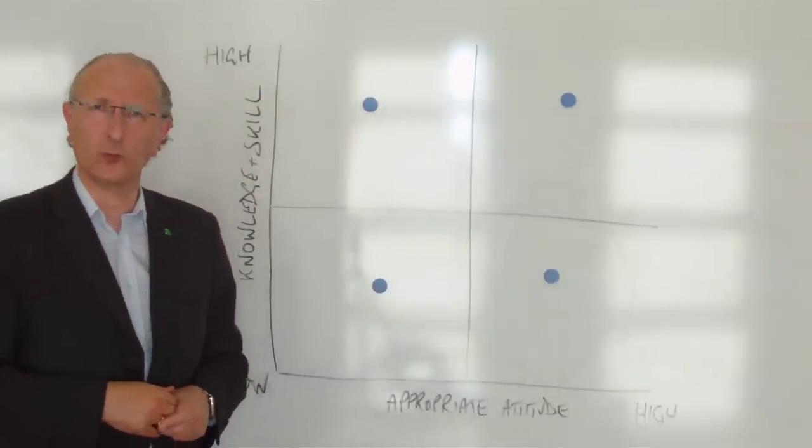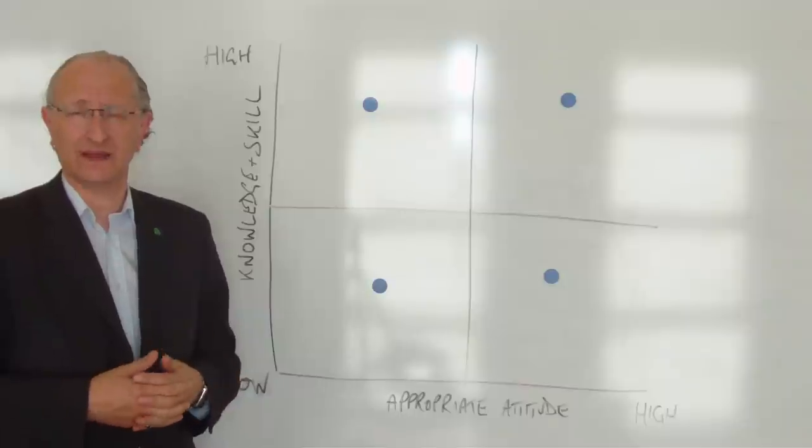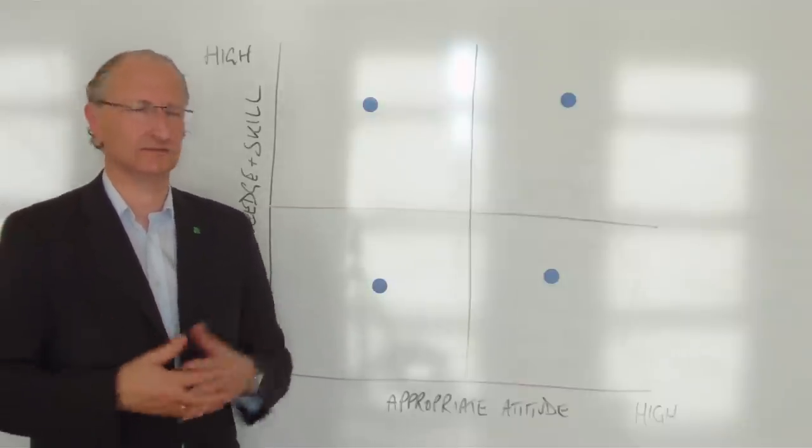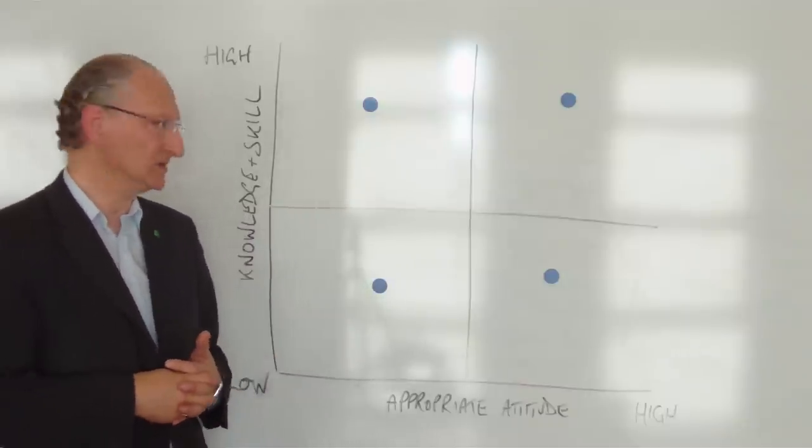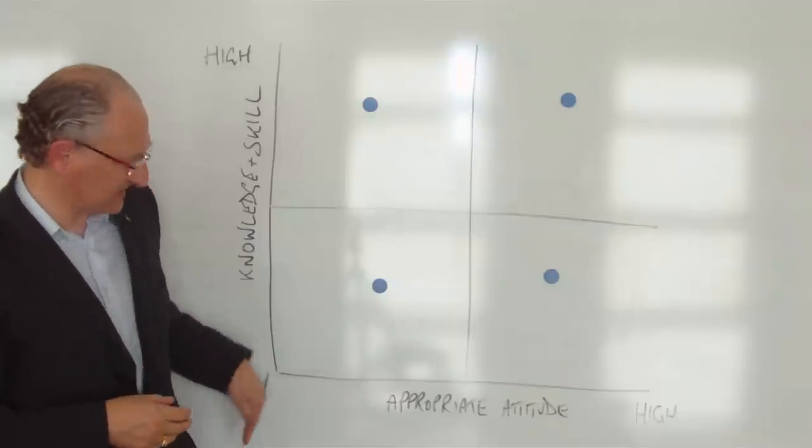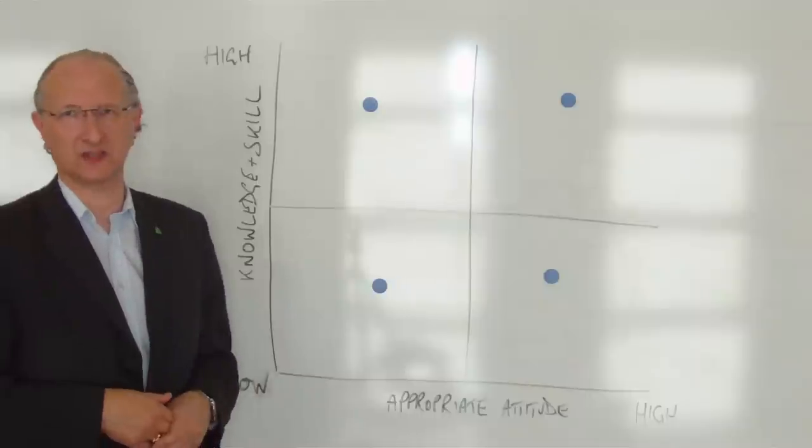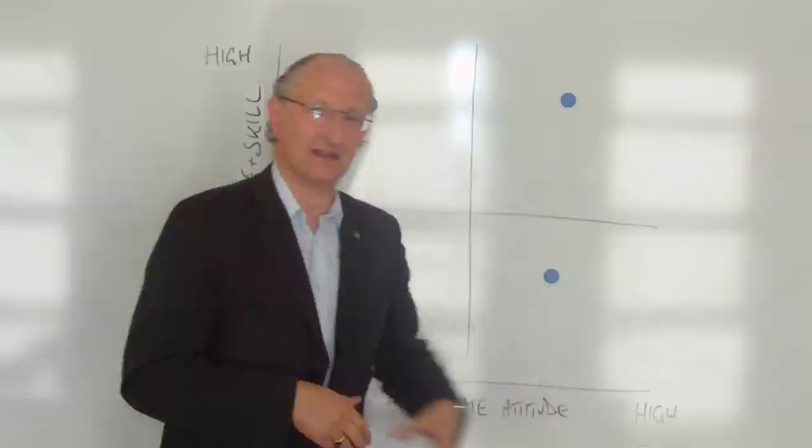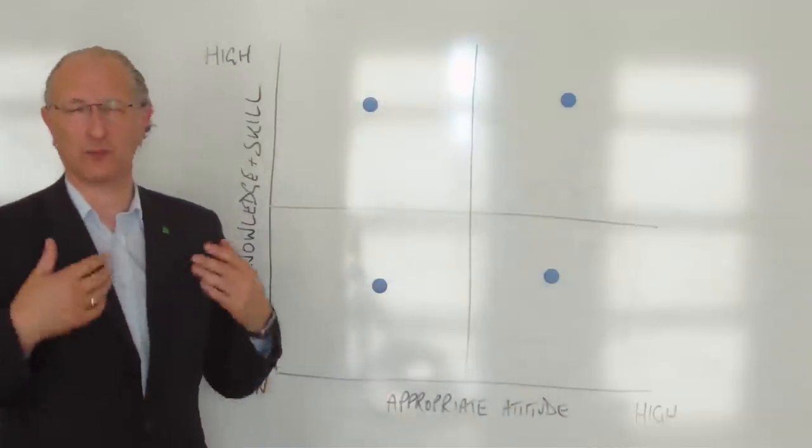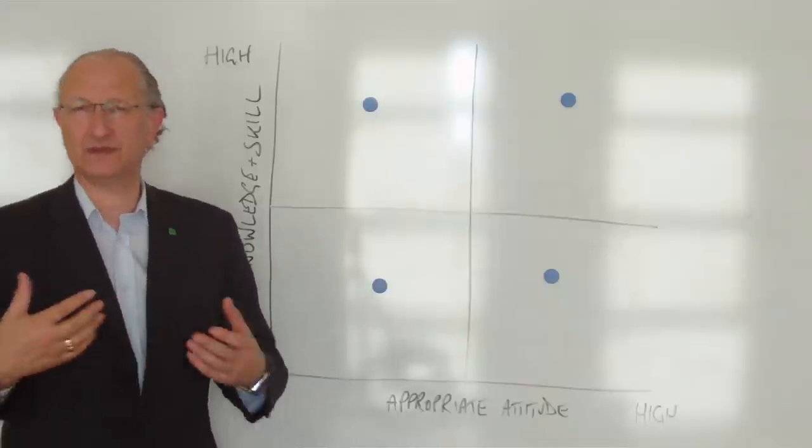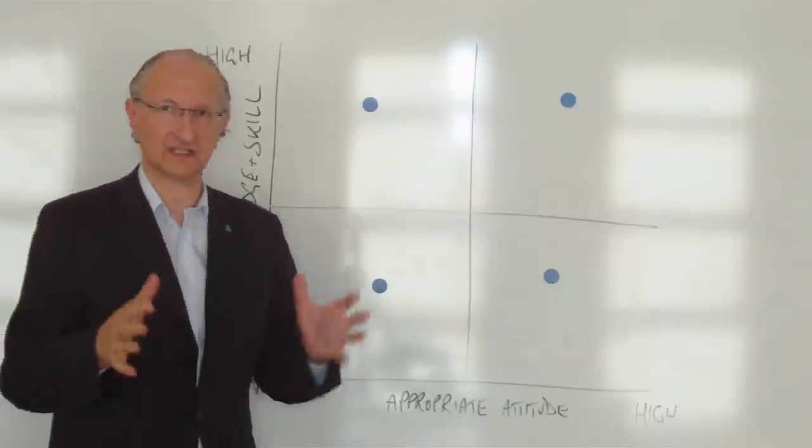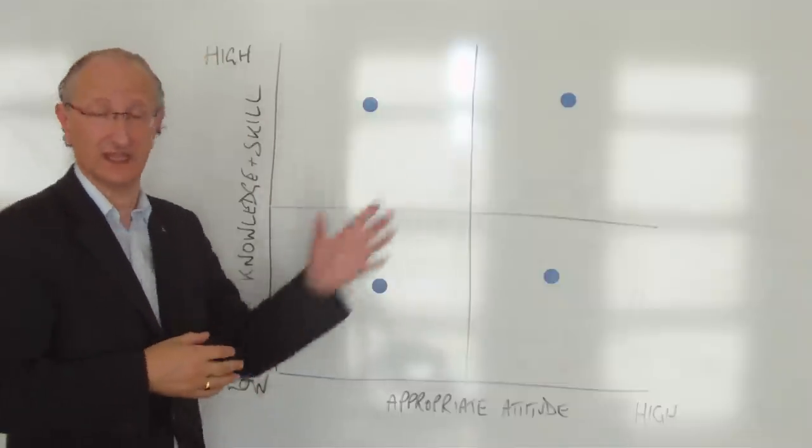What we've got is the appropriate attitude by the individual, the appropriate level of commitment, motivation, will to do the job. At this side they would have low attitude, poor attitude, inappropriate attitude. At this end they would have high attitude, appropriate commitment to the function and the role. Now, let's look at these four quadrants that this produces.